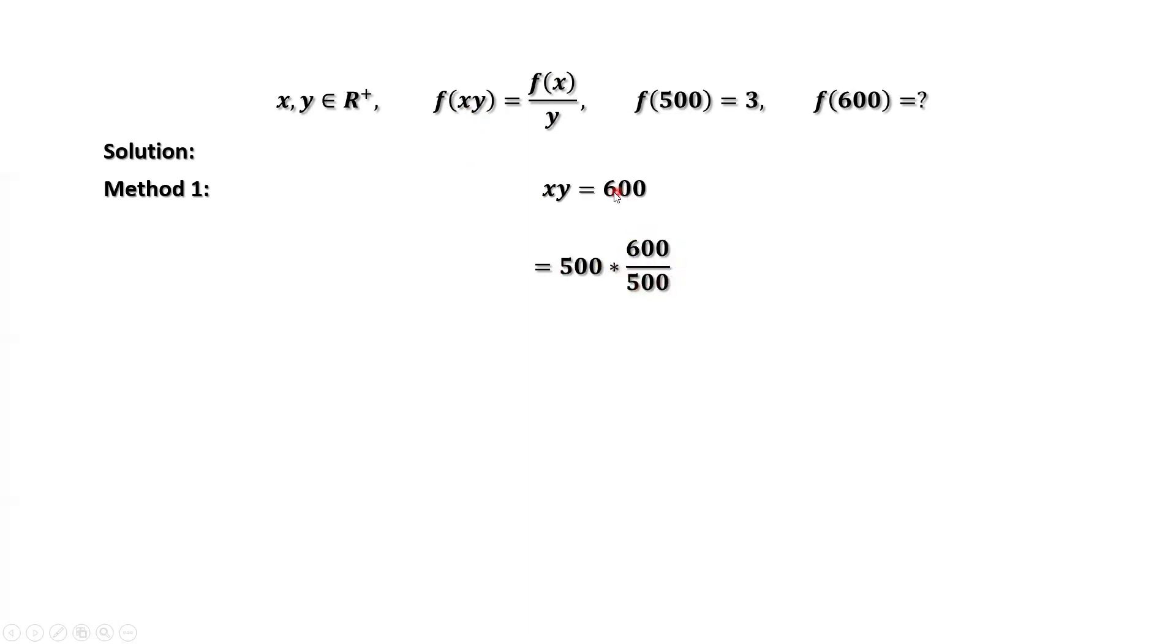This number equals 600 divided by 500. Cancel. You have 600. Now we can consider this part as x. The second part is y. Simplify this part. We have 6 over 5. This implies x equals 500, y equals 6 over 5.